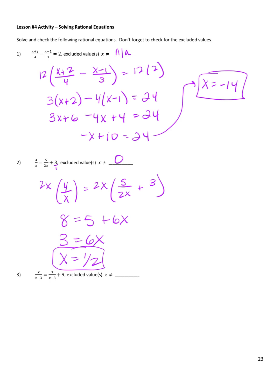For this next one, the excluded value is going to be 3. I can't make x equal 3 or I'll have a 0 in the denominator — same here. This 9 doesn't have any restricted values, so my only excluded value is 3. If I think of that as 9 over 1, my common denominator is just x minus 3, so that's what I'm going to multiply both sides by.